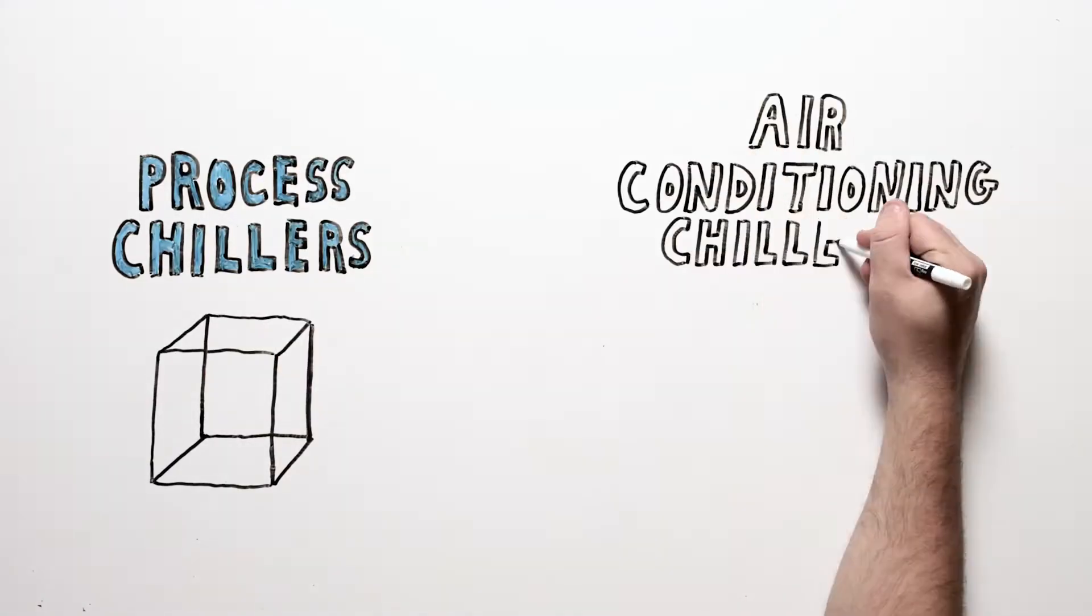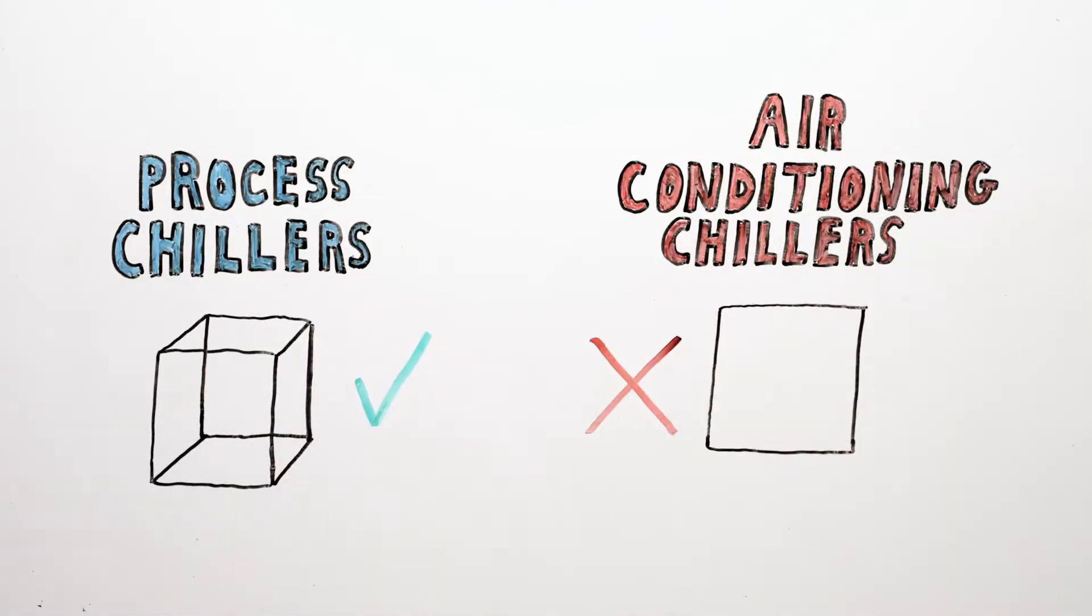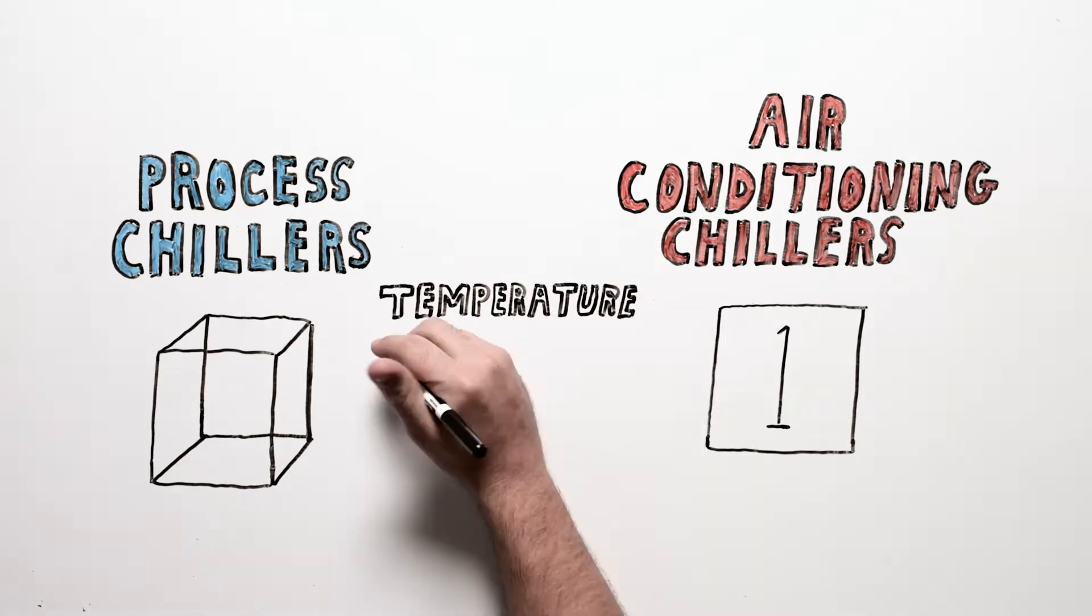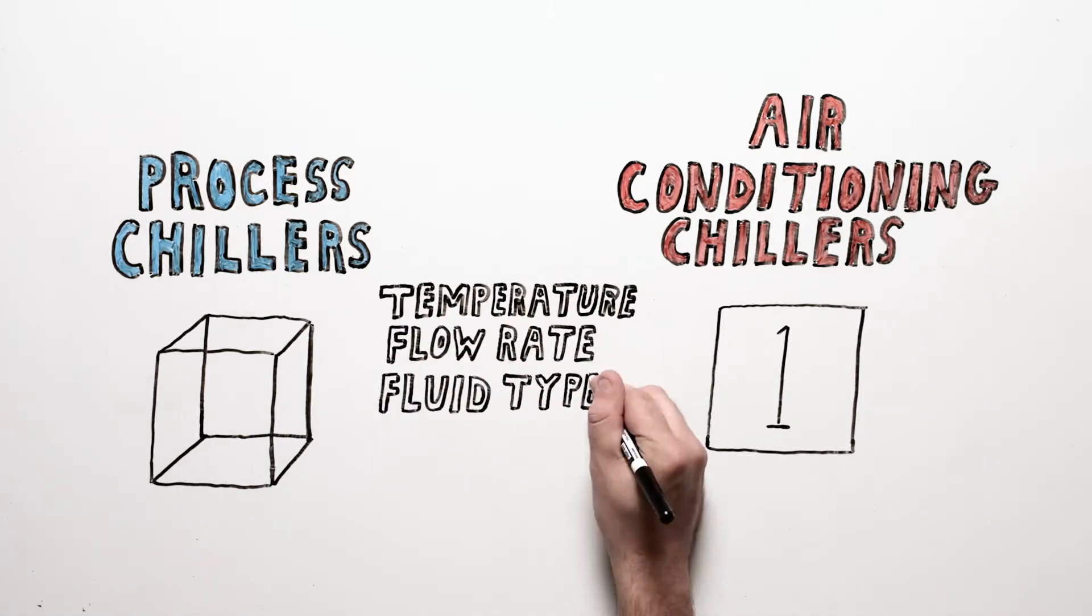Process chillers are not air conditioning chillers. Air conditioning chillers are designed to run at one specific temperature, flow rate, and fluid type.